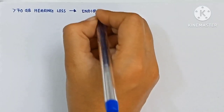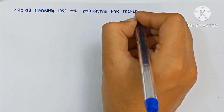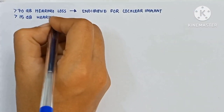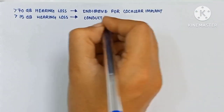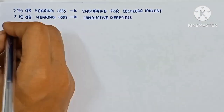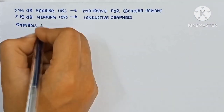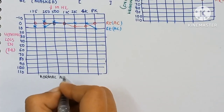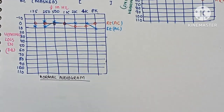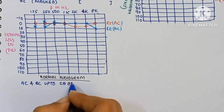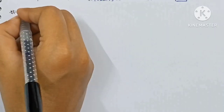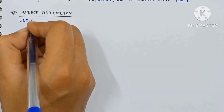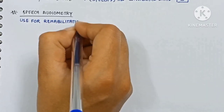More than 70 dB hearing loss is an indication for cochlear implant. More than 15 dB hearing loss is conductive. These are the symbols used for the normal audiogram for the right and left ear, and this is the normal audiogram — AC and BC up to 25 dB.